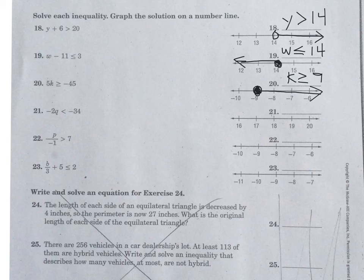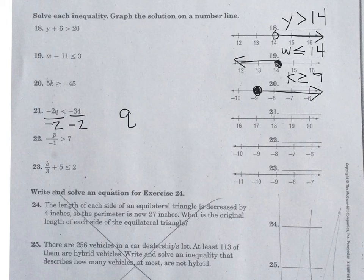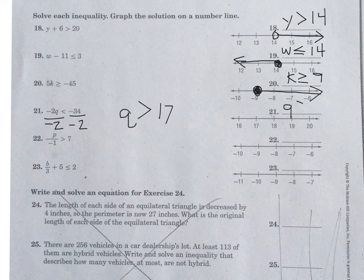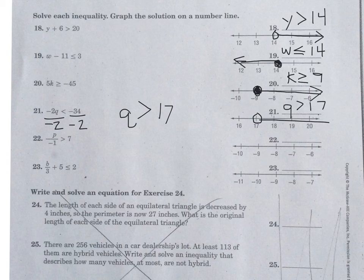For number 21, divide by negative 2. When dividing by a negative number, flip the sign, so q is greater than 17. For the graph, draw an open circle on 17 and point the arrow to the right toward the numbers greater than 17.